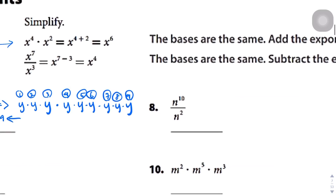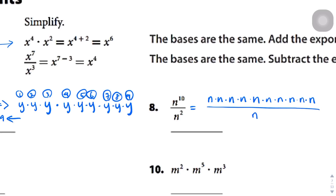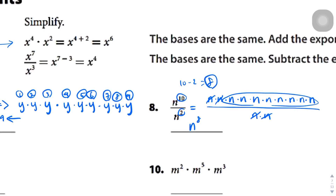In question number 8, when dividing exponents with the same base, we subtract the exponents — essentially 10 minus 2. Expanding it out: n to the 10th over n squared means 10 n's in the numerator divided by 2 n's in the denominator. We can cross two of them out, leaving 8 n's, so the result is n to the power of 8. The shortcut is just 10 minus 2, subtracting the exponents to get the resulting exponent.